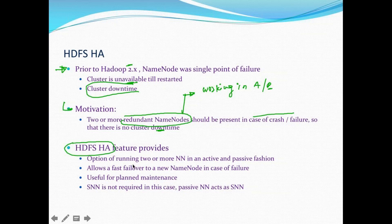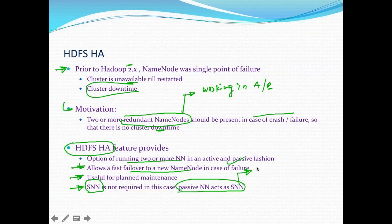The HDFS HA feature gives you the option of running two or more name nodes in active and passive fashion. If the active goes down, it allows a fast failover to the new name node — the passive automatically becomes active. It is also useful for planned maintenance. In HA, you will not have a secondary name node running; the passive name node acts as the secondary, performing the activity of periodically merging the edits file into the FSImage file.